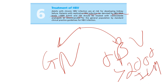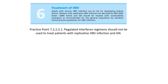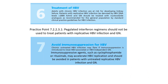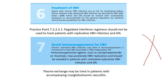Can immunosuppression be used in hepatitis B virus-associated GN? No. Immunosuppression must not be used — no cyclophosphamide, no rituximab — because immunosuppression may increase the replication of hepatitis B virus and worsen the condition. Is there a role for plasma exchange? It is discussed on a case-by-case basis and may be tried in patients with accompanying cryoglobulinemic vasculitis with hepatitis B virus.